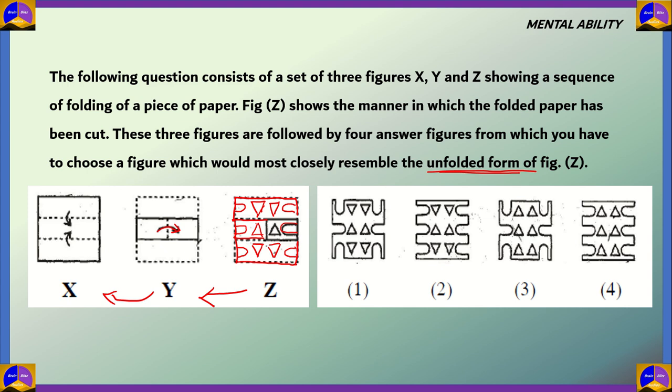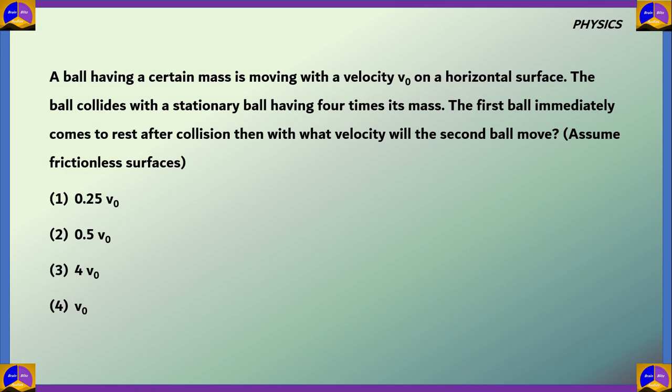If we look at the options we can see option 2 is the correct answer. 1, 3, 4 are incorrect because either the triangle or the shape has been misarranged. Next question on physics.